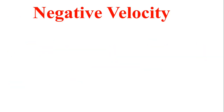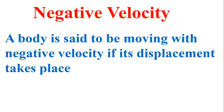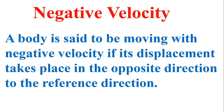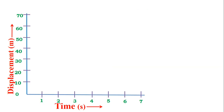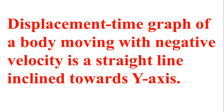Now let's talk about the third one: negative velocity. A body is said to be moving with negative velocity if its displacement takes place in the opposite direction to the reference direction. If a body has a displacement of 50 meters and in the next second it goes down to 40, then 30, then 20, then 10, and finally comes to rest — if we join all these points, we get this type of graph. The displacement time graph of a body moving with negative velocity is a straight line inclined towards the Y axis.